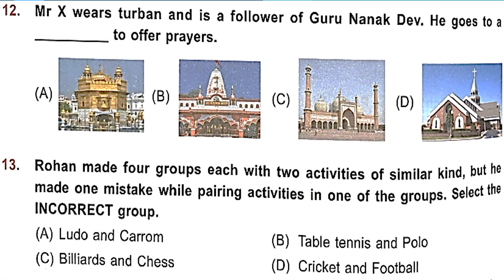Question 12: Mr. X wears a turban and is a follower of Guru Nanak Dev. He goes to dash to offer prayers. Mr. X is a Sikh — Sikhs wear turbans and follow Guru Nanak Dev, and they go to the Gurudwara. Which of these is a Gurudwara? It is Option A — the Golden Temple.